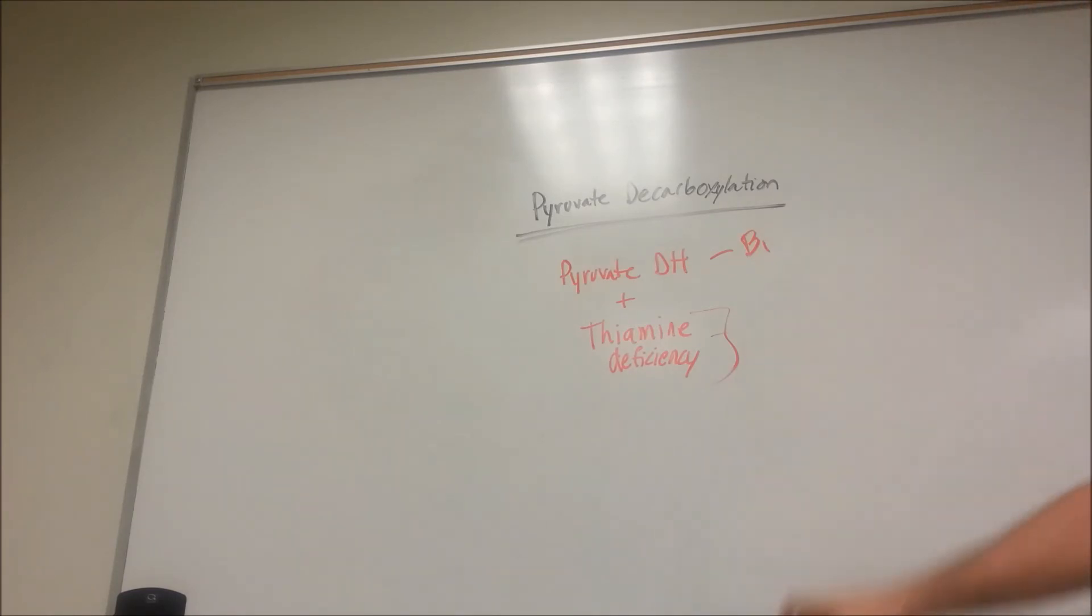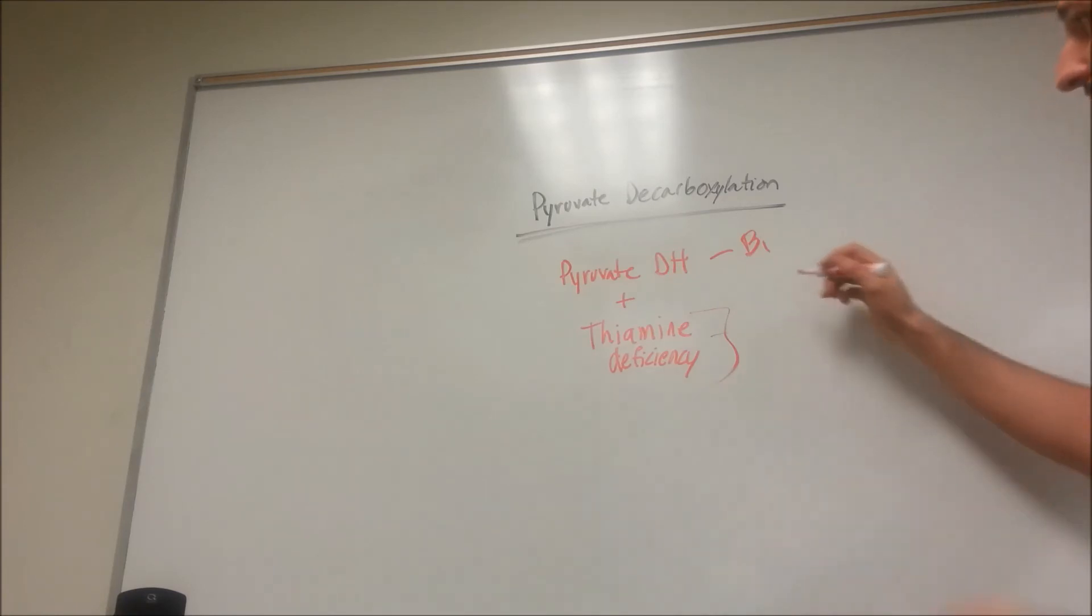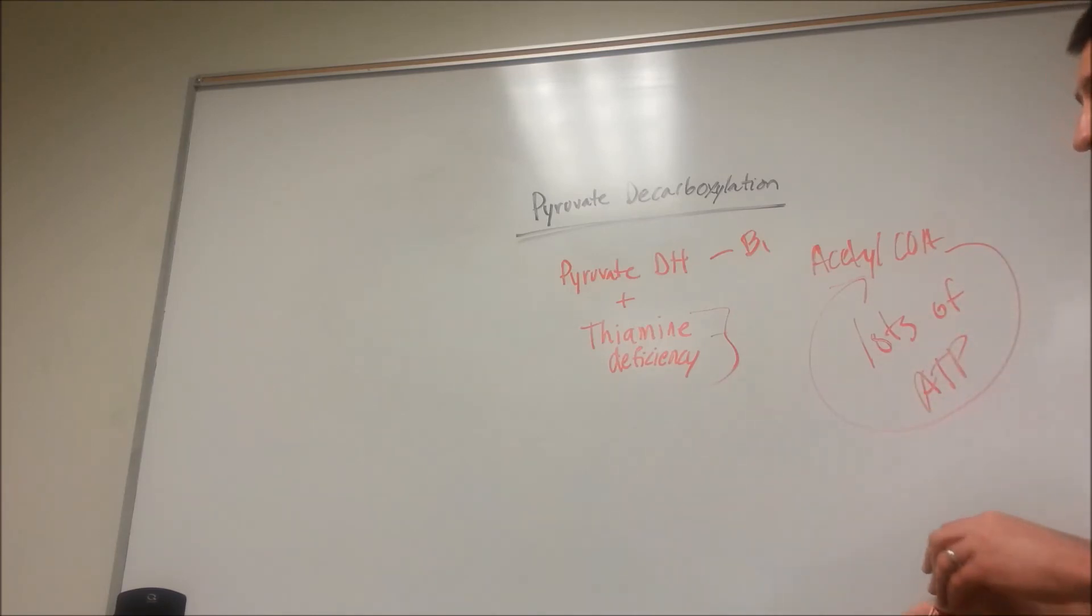Let's talk about why this actually happens. So thiamine is needed to create ATP, like we said. Pyruvate gets converted to acetyl-CoA. Acetyl-CoA gets fed into this TCA cycle. That's going to create lots of ATP.